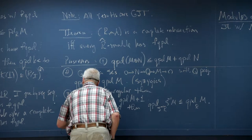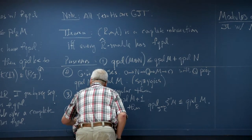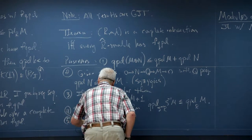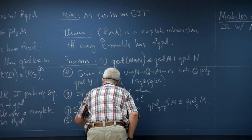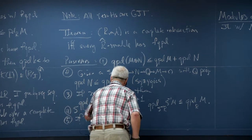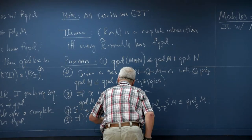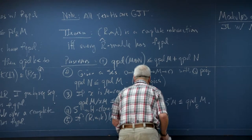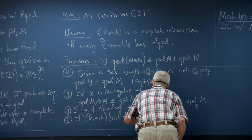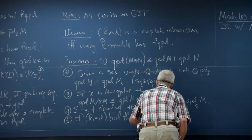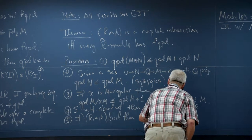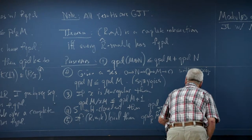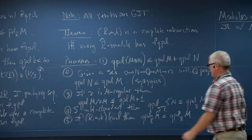The same thing holds for completion: if R is local, then the quasi-projective dimension of M-hat over R-hat is less than or equal to the quasi-projective dimension of M over R. Localization is a flat functor, so it doesn't change the homology of your quasi-projective resolution.